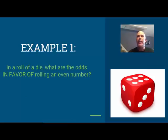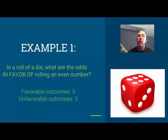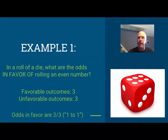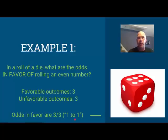Example one: in a roll of a die, what are the odds in favor of rolling an even number? I need favorable and unfavorable. A die has six sides — three have even numbers and three don't — so the odds in favor are three to three. We can reduce it, but we need to call it one to one; we need to keep that comparison intact. Don't simply call your answer one.